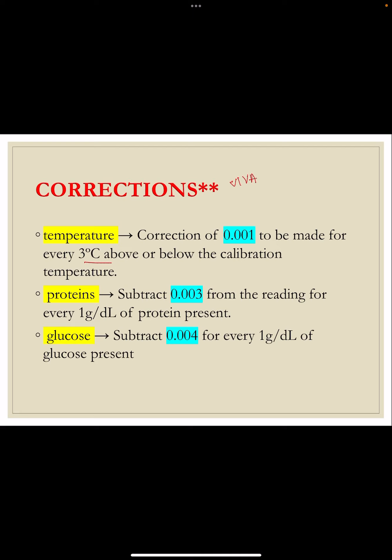For temperature correction: add 0.001 for every 3 degrees Celsius above 20°C, and deduct 0.001 for every 3 degrees Celsius below 20°C. For glucose, subtract 0.004 from the reading for every 1 g/dL of glucose present. For proteins, similar corrections apply. These corrections are commonly asked as viva questions, and further details on specific gravity have also been provided via a link.